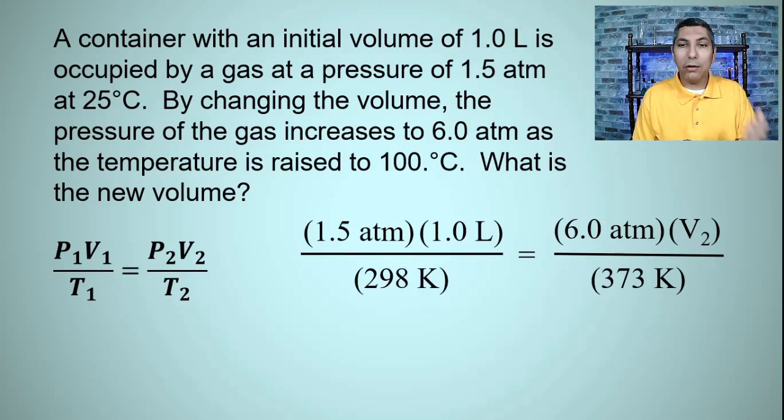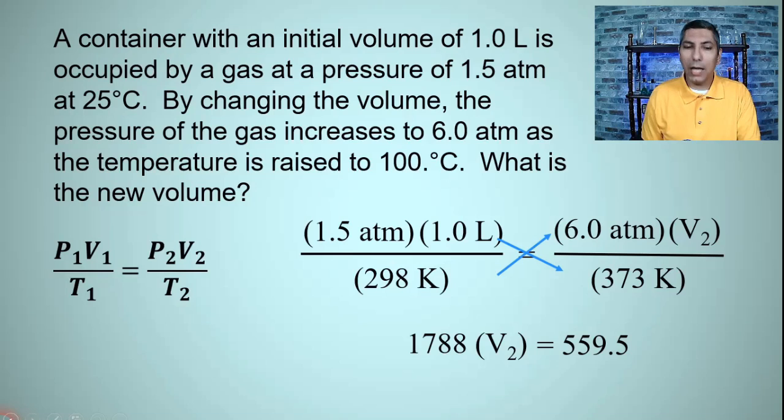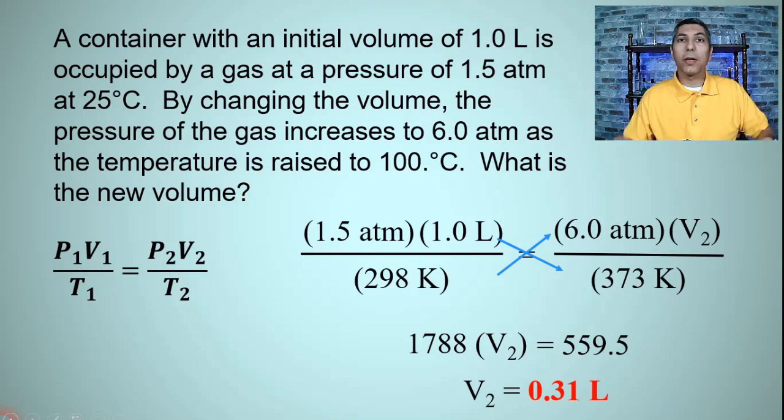So now we just have an algebra equation that we have to solve. So once again, cross multiplication seems to be a pretty good method here. So when I cross multiply in this direction, 298 times 6.0 times V2, that's about 1788 times V2. And that's equal to when I cross multiply in this direction, 1.5 times 1.0 times 373, which is about 559.5. So I divide both sides by 1788. And I find that V2, the final volume, is about 0.31 liters. So that's how you'd solve a problem with the combined gas law.